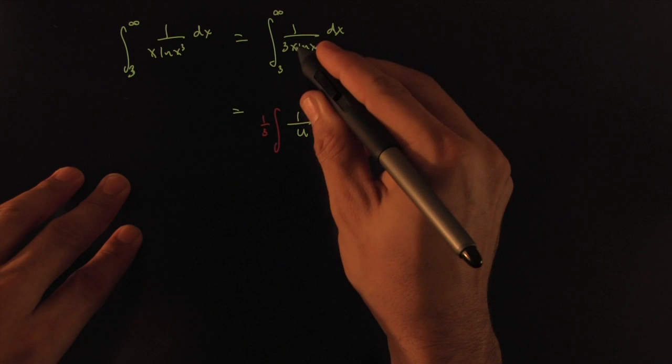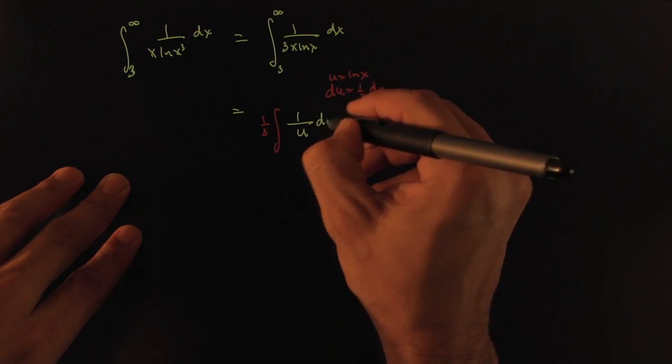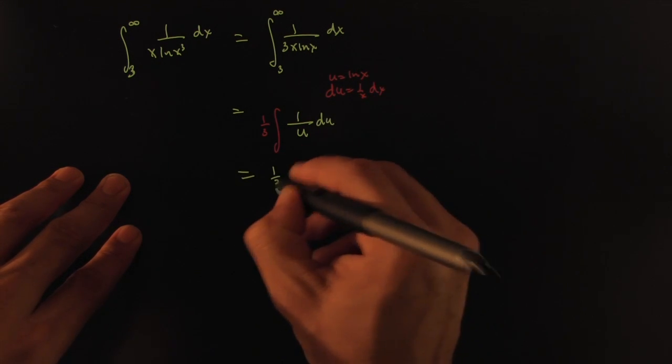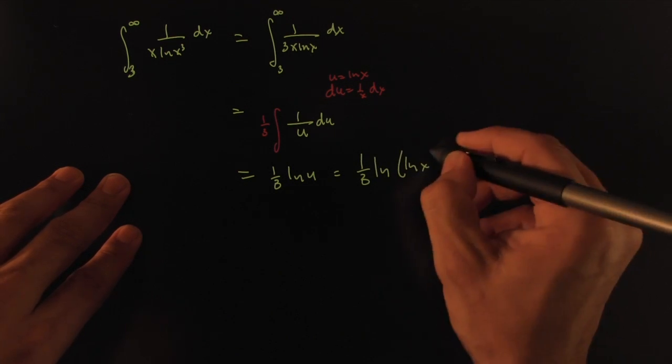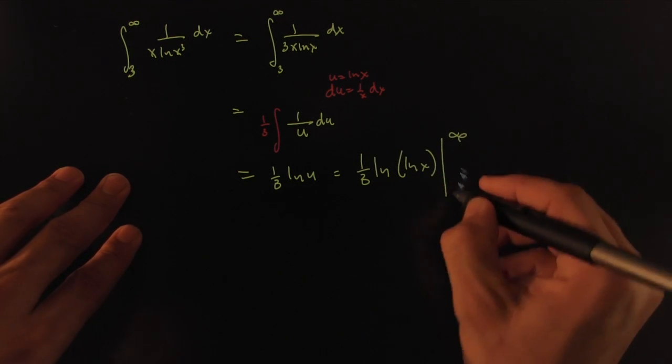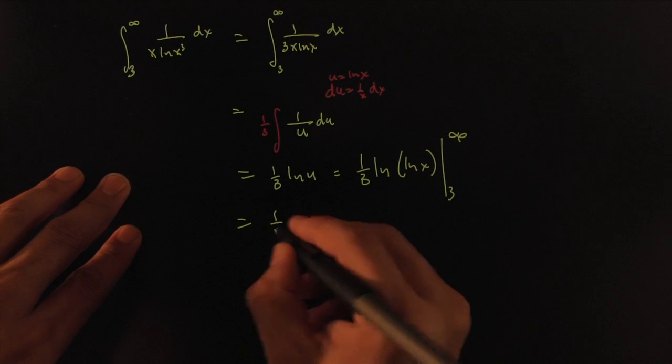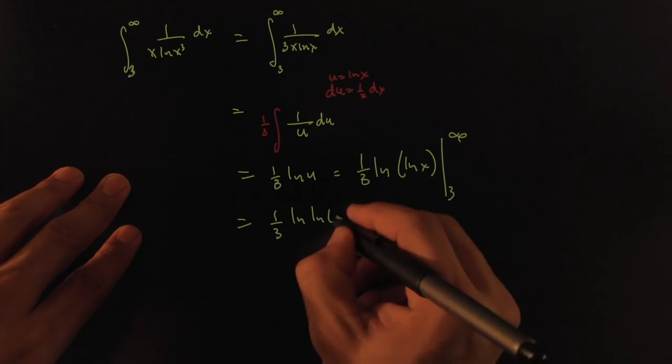This would look like just 1 over u, and then the dx with a 1 over x is a du. So this would be du. So this would be 1/3 ln(u), so this would be 1/3 ln(ln(x)), and of course we're going from infinity to 3.